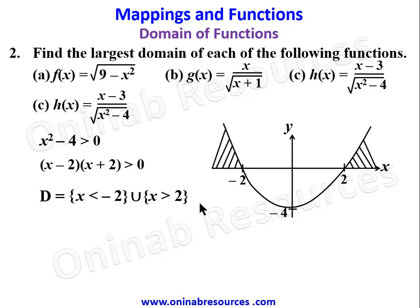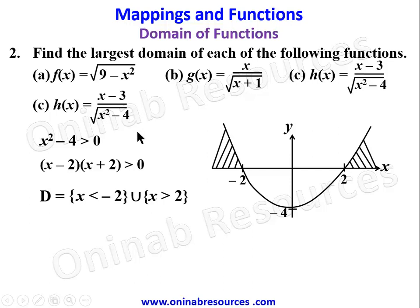The domain of h(x) is stated as: the set of x such that x < -2 union x > 2. For instance, x = 3 gives 9 - 4 = 5, which is positive, so √5 is valid. Similarly, x = 5 gives 25 - 4 = 21, which is positive. And x = -3 gives (-3)² - 4 = 5, also positive. So this is the largest domain of h(x).